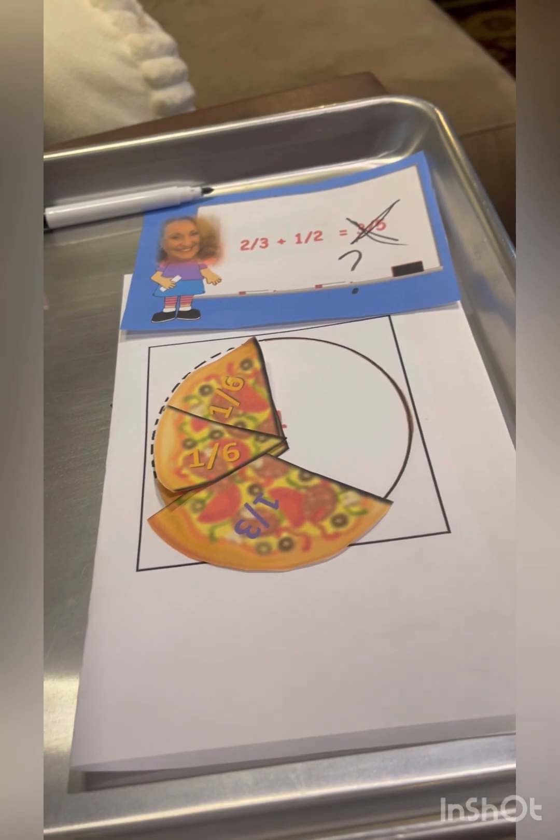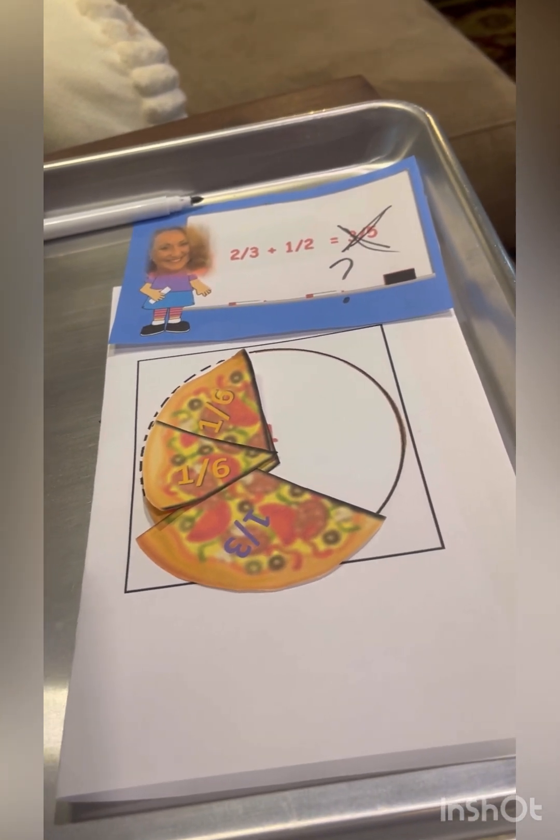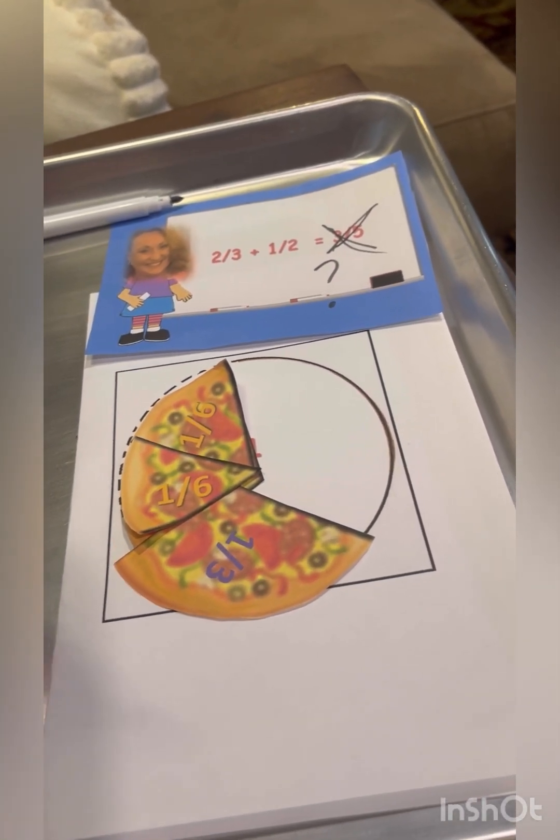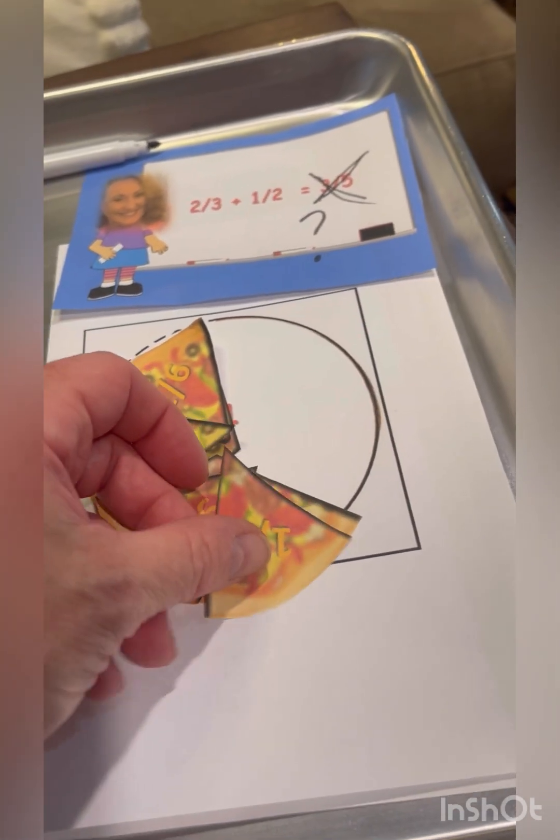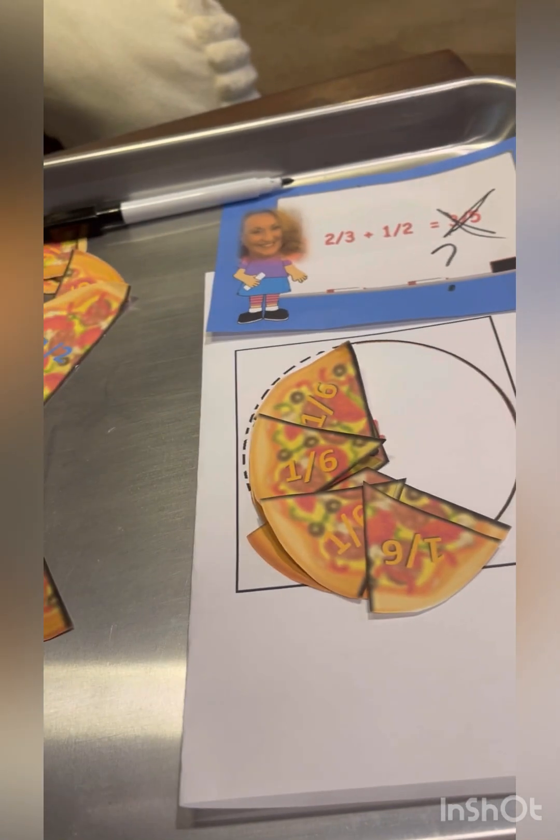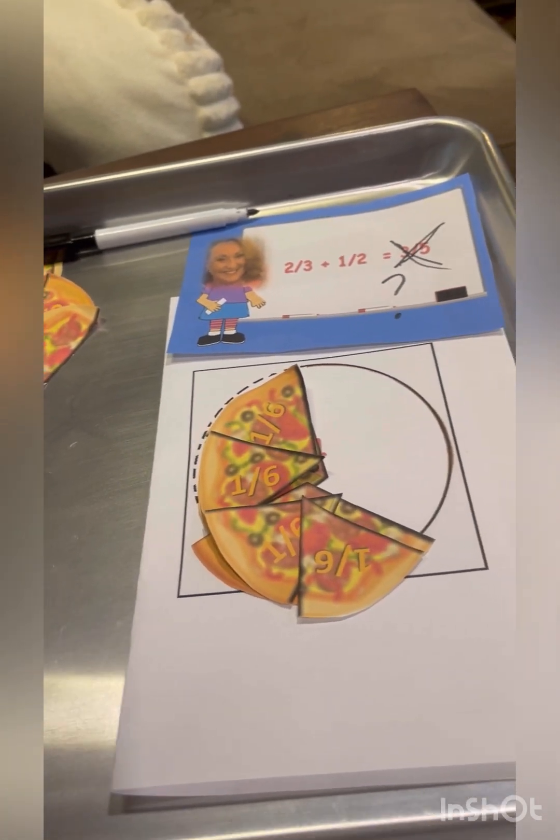And look at that. So, two one-sixth equals one-third. So, what if we add and finish up? Oh, my goodness. Four. Four. We have four one-sixths.